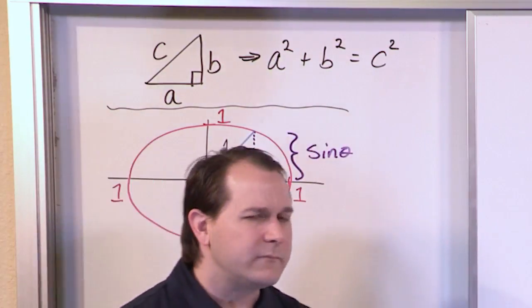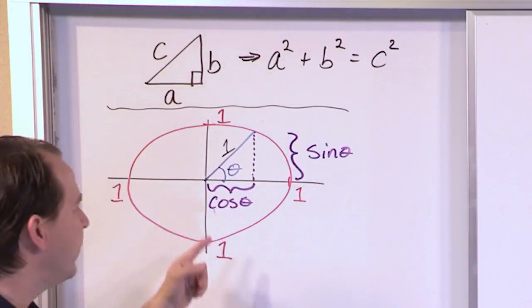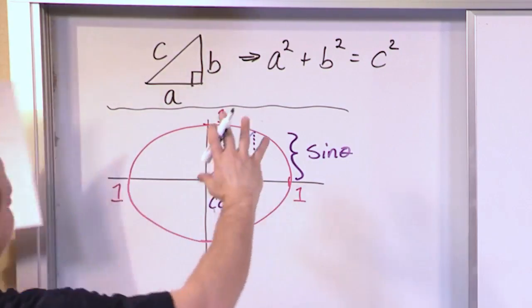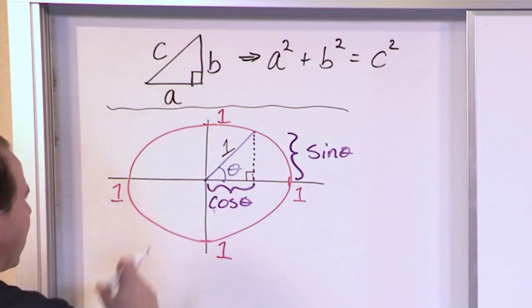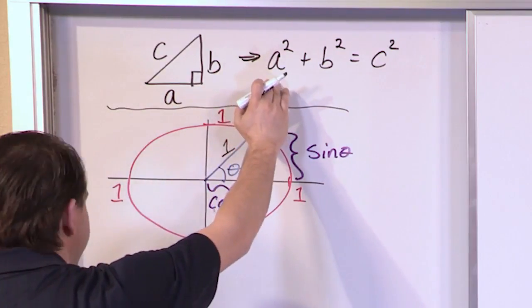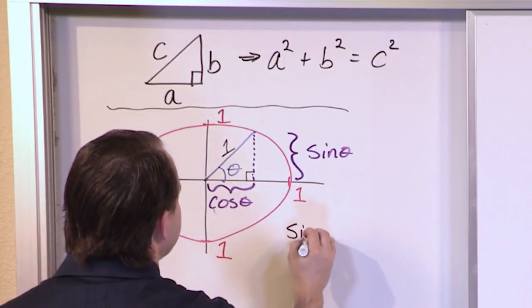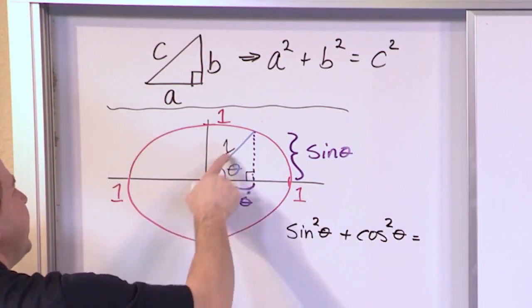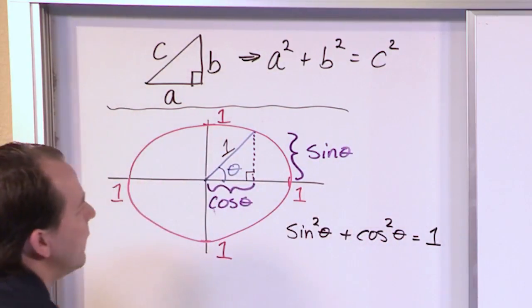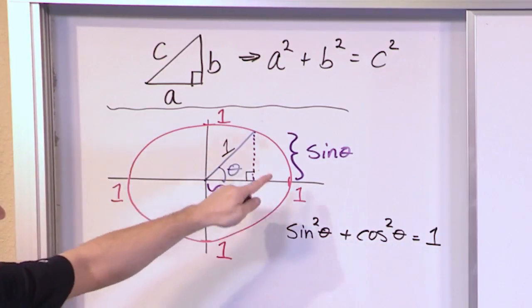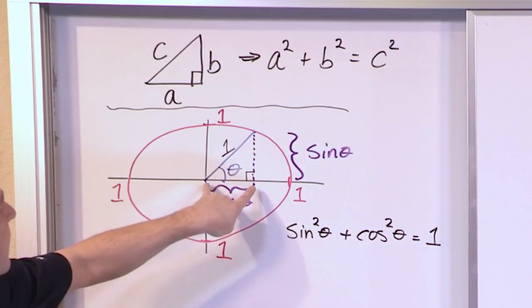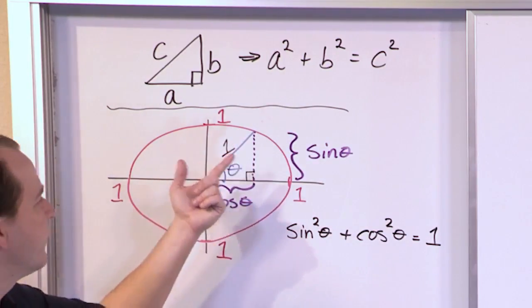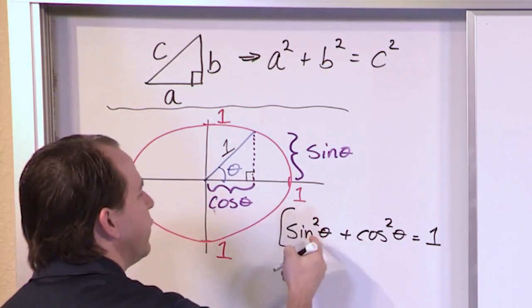The Pythagorean theorem applies to all right triangles, and all we've done is put a right triangle inside a circle. So much like what we've written, we now have sine squared theta plus cosine squared theta is equal to the hypotenuse squared — but since the hypotenuse is one, one squared is just one. This is the fundamental Pythagorean identity: sine squared plus cosine squared is equal to one.